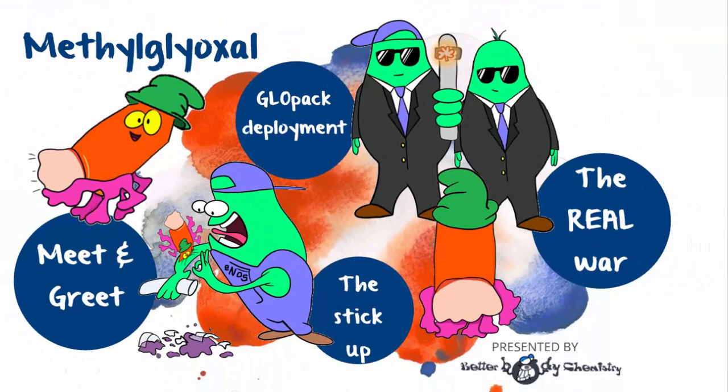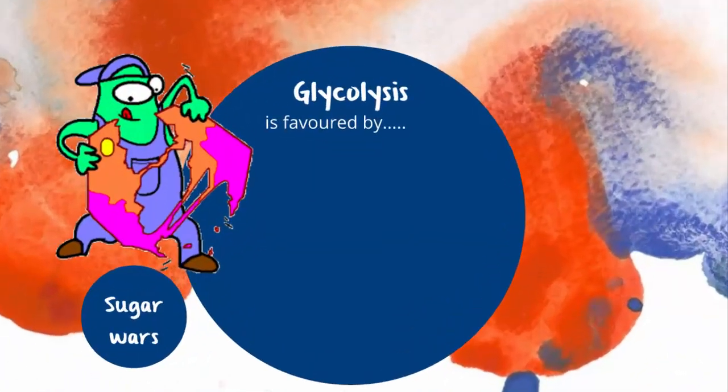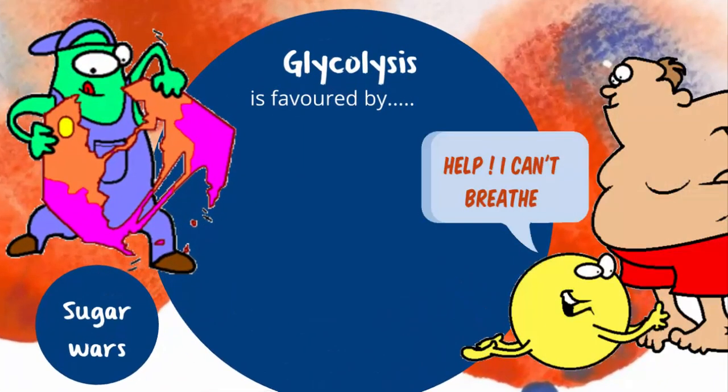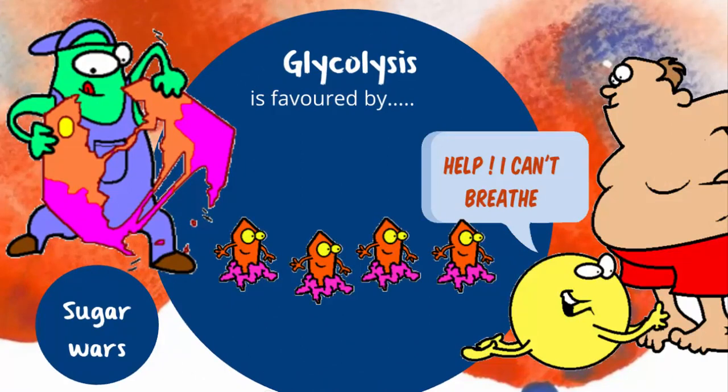So when does glycolysis speed up? The bottlenecks happen when oxygen is in short supply and/or there's lots of sugar. Unfortunately, these are common situations when you're insulin resistant.